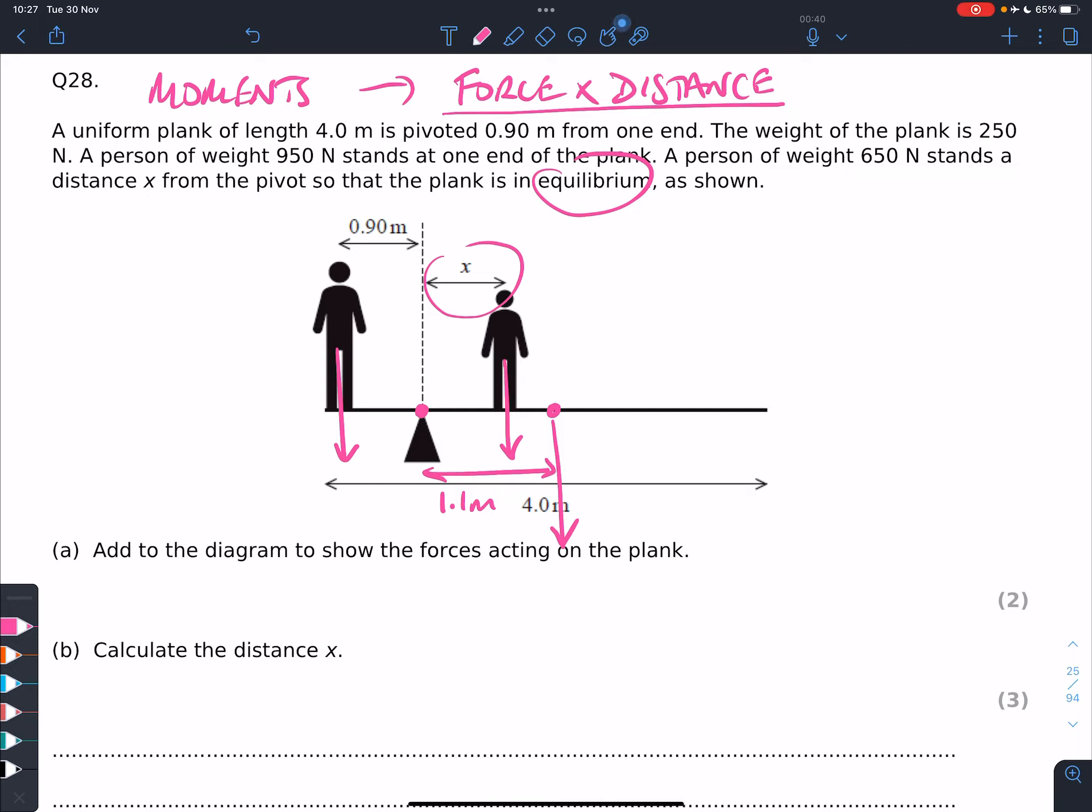Then the turning effect in one direction, in this case clockwise, has got to be equal to the turning effect in the other direction, anti-clockwise. And what we need to do now is just put the forces in and see which ones are turning which direction.